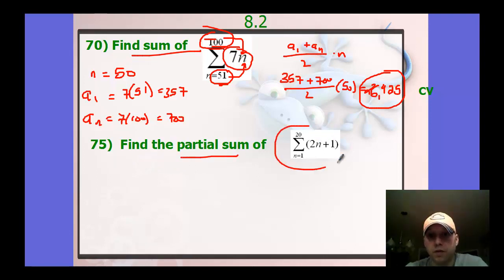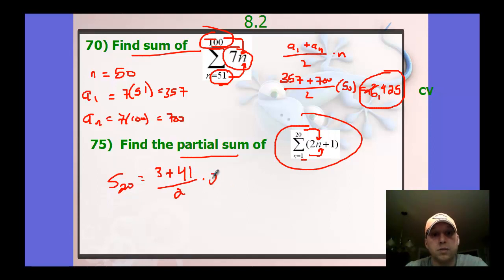Let's do one more. A partial sum given this rule. So this is from 1 to 20. So that would be 20 numbers. And so we're doing a sum of 20 numbers. The first number, we plug 1 in for n. So we're getting 3 plus, now we plug 20 in. That's going to be 41 all over 2 times 20. So that's going to be 44 over 2, or 22 times 20, which is going to be 440.